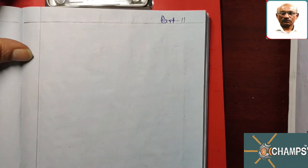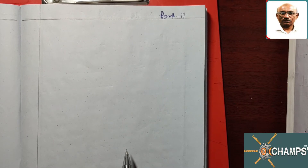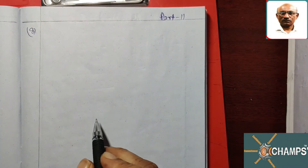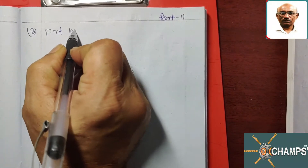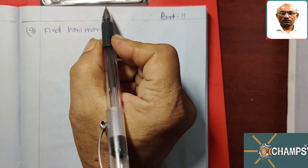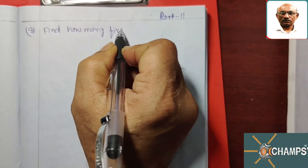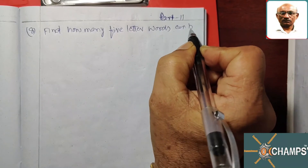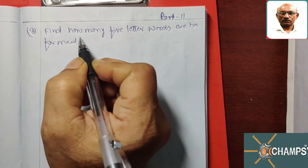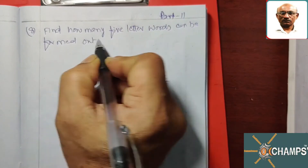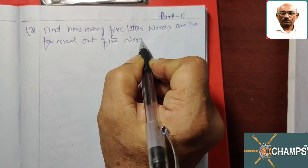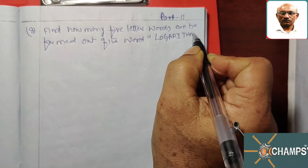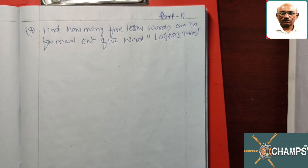Welcome back to the next session of Permutations and Combinations. We are in the process of doing additional question bank problems. Let's see the 8th question: find how many five letter words can be formed out of the word 'logarithms', without repetition.